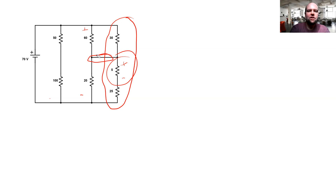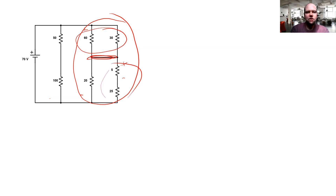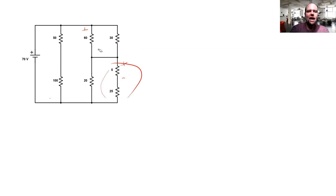We have to look at essentially this whole mess over here. What you'll notice is this wire basically means that these resistors share a node, which means that these two resistors are in parallel and these two resistors are in series, but this series combination is in parallel with this resistor over here. Recognizing that is going to help us analyze this. We know there's 70 volts across this entire thing.